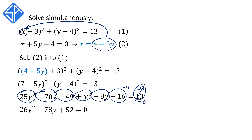All of this is equal to 26y squared minus 78y plus 52 equals 0. Since 26 is a common factor for all the terms, we can simplify further by dividing every single term by 26. This gives us a simplified quadratic equation: y squared minus 3y plus 2 is equal to 0.